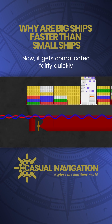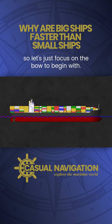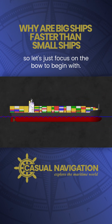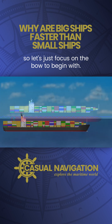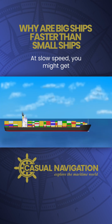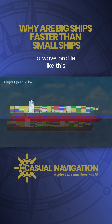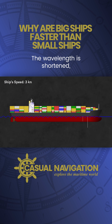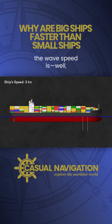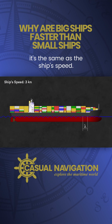Now, it gets complicated fairly quickly if we have two wave systems, so let's just focus on the bow to begin with. At slow speed, you might get a wave profile like this. The wavelength is short and the wave speed is, well, it's the same as the ship's speed.